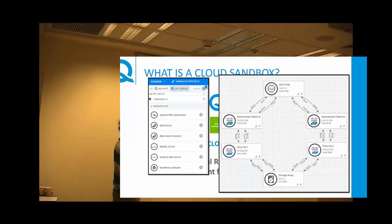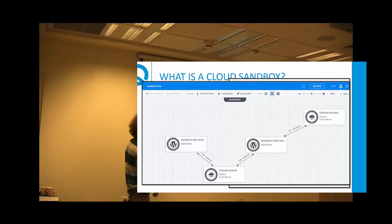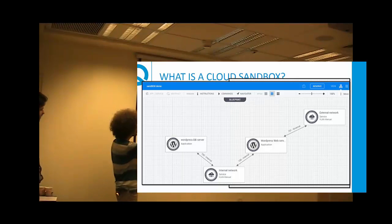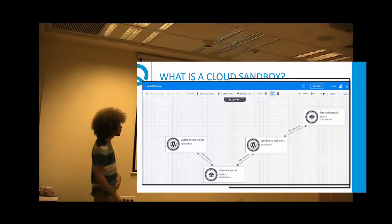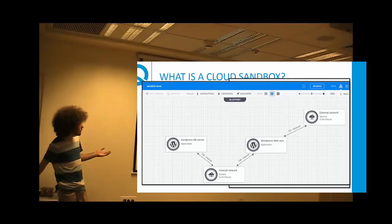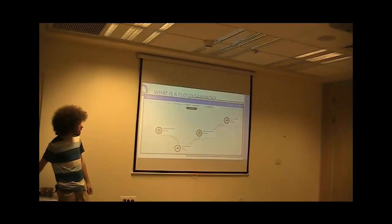Here's an example for WordPress. We have the database and the web server connected via an internal network. When we initiate this sandbox, we'll have VLAN 100 connecting between the apps and a leg outside on VLAN 101. This way, if my application is something for WordPress, I can quickly set up an environment with one leg outside the network and one leg connecting between the database and the web server.